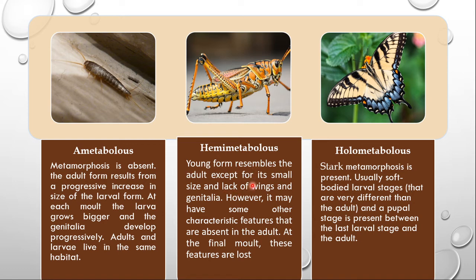Hemimetabolous insects are different. The young form resembles the adult except for its small size and lack of wings and genitalia; however it may have some other characteristic features that are absent in the adult, which are lost at the final molt. In the grasshopper you can see the small wings growing on the nymph; in the final instar these wings will grow completely. The most advanced insects - holometabolous insects - show stark metamorphosis where soft-bodied larval stages become the adult through a transitional phase known as the pupa.